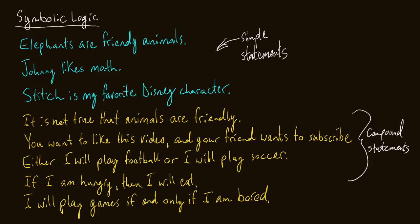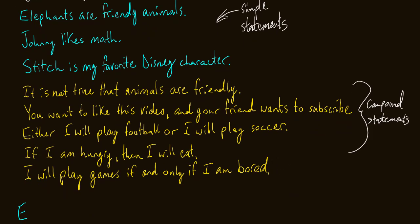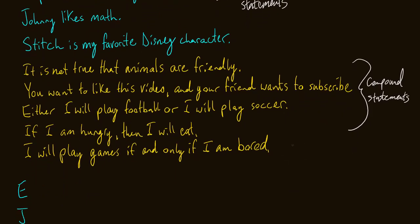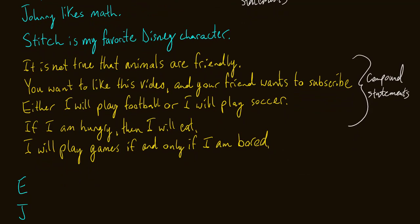So we're talking about symbolic representations of statements. Now with our simple statements, it's actually super easy. What we do is we take a statement like elephants are friendly and replace that with one letter. This letter can be chosen arbitrarily. If you're doing a homework problem or test or quiz in a logic class, odds are your professor is going to tell you what letter they would like for the simple statements. So some examples. Elephants are friendly animals, I would just replace that with the letter E. E means elephants are friendly animals. For Johnny likes math, I might just say J. That would be my symbolic representation of that statement. Likewise, Stitch is my favorite Disney character, that'll just be S.